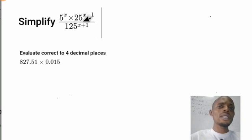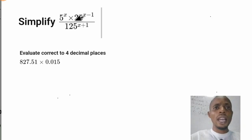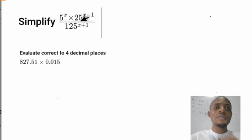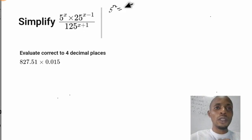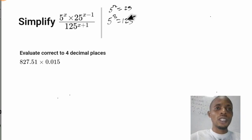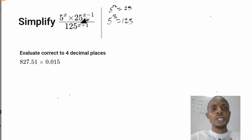The first thing to consider here is the base. You have base 5, and the base of 25 is also 5, so 5 is common to both sides. Now 25 can be expressed as 5 to the power of 2, which gives us 25. And 5 to the power of 3 gives us 125. So we replace 25 with 5² and 125 with 5³.